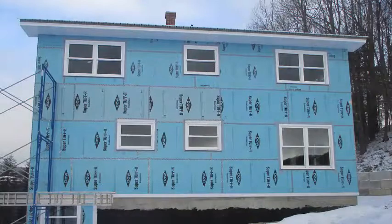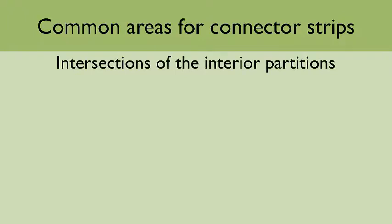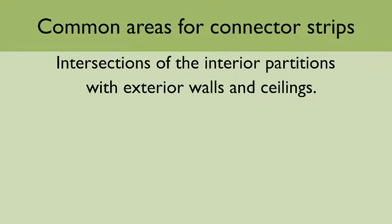To ensure continuity, connector strips of poly must be installed during framing. Later, larger sheets covering the bulk of the walls and ceilings can be lapped and sealed to the strips already in place. The most common areas requiring connector strips are the intersections of interior partitions with exterior walls and ceilings.